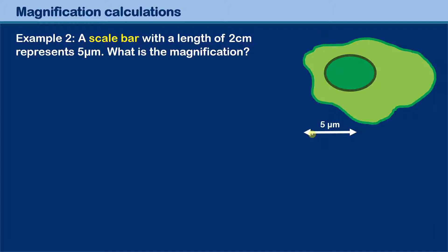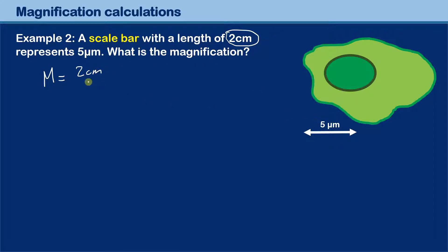You can do magnification calculations using only scale bars. The length is two centimeters on paper — of course the length on your screen will differ depending on how much you enlarge the video. I'm giving these values as an example. The magnification formula is: magnification equals two centimeters divided by five micrometers.